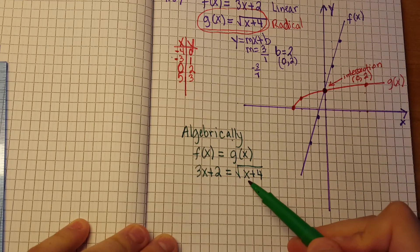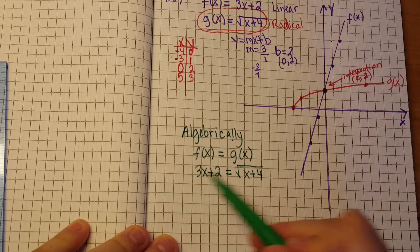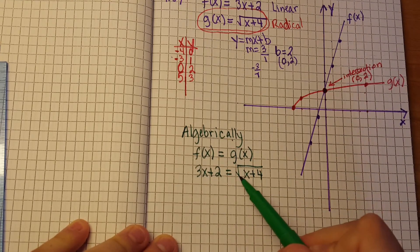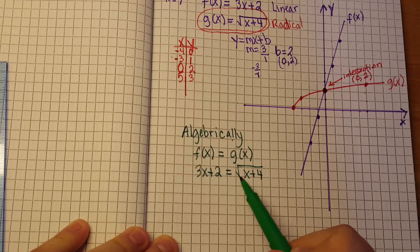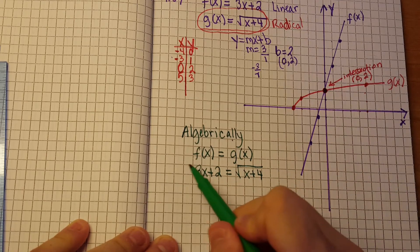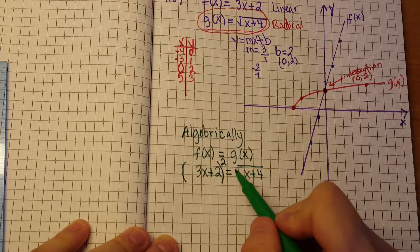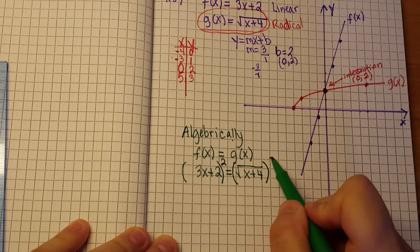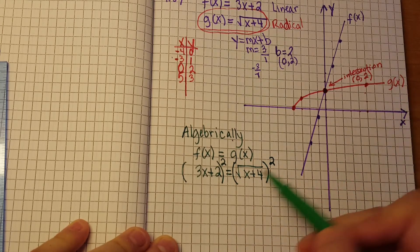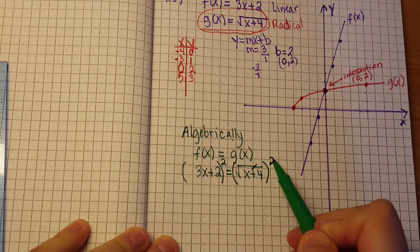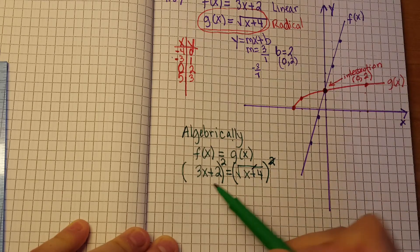Well, f of x is 3x plus 2 is equal to the square root of x plus 4. Our goal is to solve for x. Well, in order for us to solve for x, we need to square both sides in order to cancel out the square root. So what we're going to do is, we're going to square 3x plus 2, then we're going to square the radical, and when we square the radical, what happens? The radical and the square cancels out.